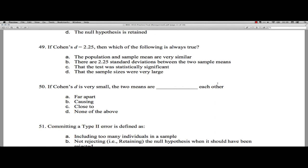Another question on Cohen's D. 49. If Cohen's D equals 2.25, then which of the following is always true? A, the population and sample means are very similar. No, they're not. They're 2.25 standard deviations away from each other. So A is not true. B, there are 2.25 standard deviations between the two sample means. Yes, that is correct. That's the meaning of it. Again, Cohen's D is measuring how many standard deviations there are between means. It's very similar to Z scores. So B is correct. C, that the test was statistically significant. Now, that depends on the sample sizes. So we can't get a p-value because we don't have the sample size information. And D, that the sample sizes were very large. That's neither here nor there. That's a totally separate issue because D specifically removes the effective sample sizes. So anyhow, 49 is B. If Cohen's D is equal to 2.25, then that means that there's 2.25 standard deviations between the two sample means.